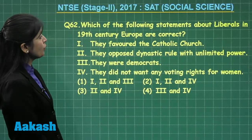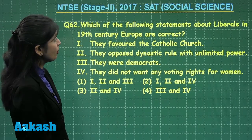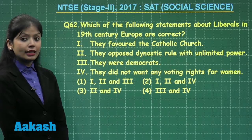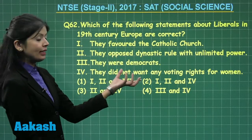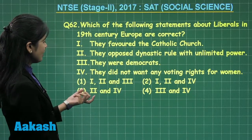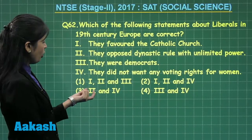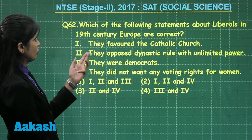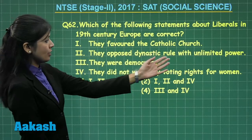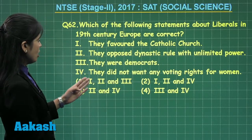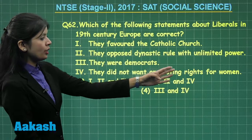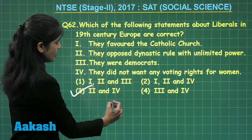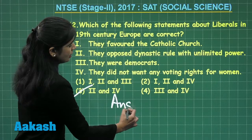Question number 62 asks which of the following statements about liberals in 19th century Europe are correct. The correct answer is option number 3 — statement number 2 and statement number 4 are both correct: they opposed dynastic rule with unlimited power, and they did not want any voting rights for women.